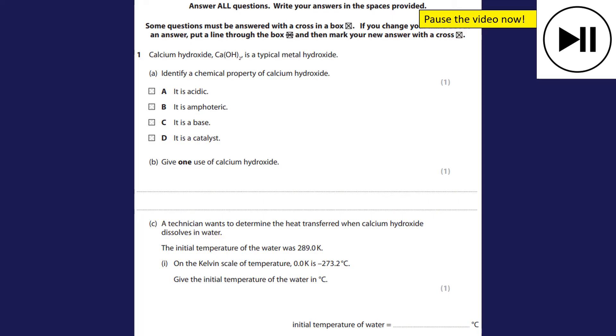So 1A, calcium hydroxide is a typical metal hydroxide. Identify a chemical property of calcium hydroxide. Well, what we learned about at the very beginning was that metal oxides and metal hydroxides were bases. They would react with metals. The answer here for calcium hydroxide is it's a base. One use of calcium hydroxide then, well it's used in industry to treat acidic effluent, so it's used to neutralize acidic effluent or acidic waste in industry. It's also used to increase the pH of soil in agriculture.